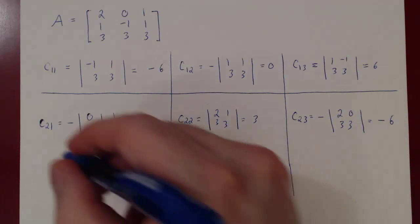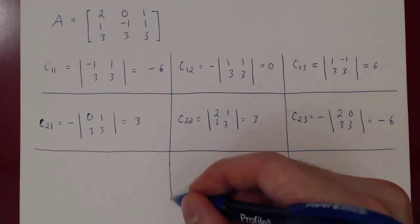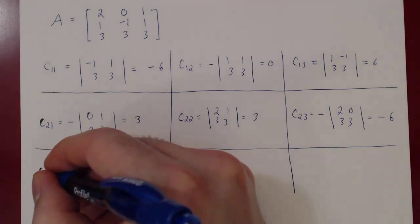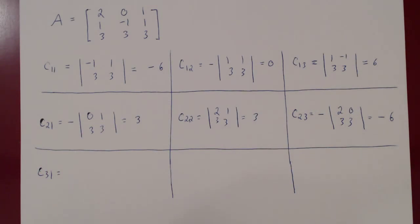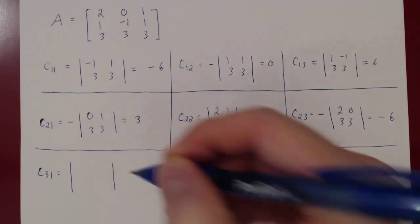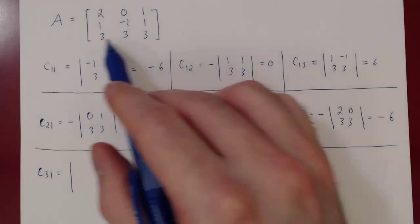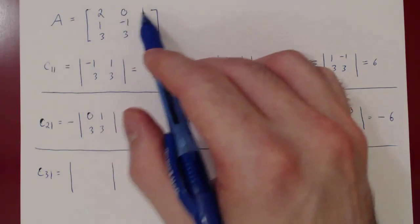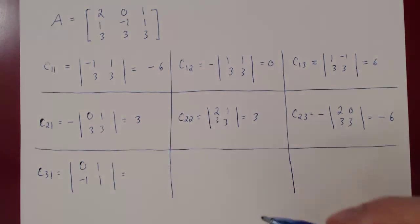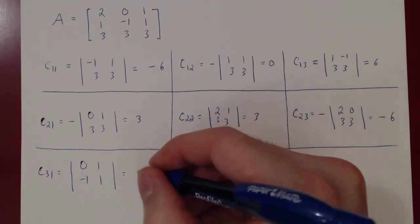Now we're two-thirds of the way done — we're missing the cofactors for the third and final row. C31: 3 plus 1 is 4, which is even, so no negative sign. The determinant of the 2 by 2 matrix after deleting the third row, first column, gives us 0, 1, negative 1, 1. The determinant is 0 minus negative 1, so it's positive 1.